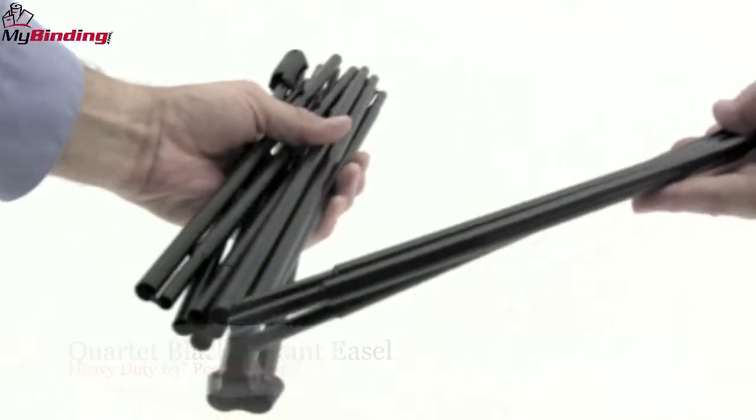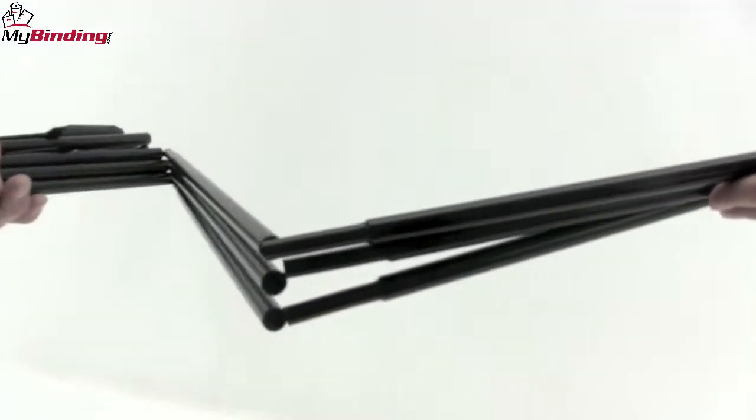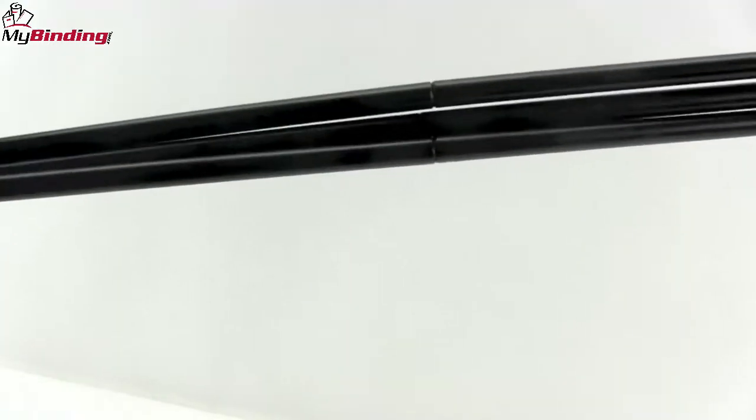This easel is lightweight and compacts down to 25 inches for travel size. It's all aluminum construction makes it strong and it opens up just like tent poles.